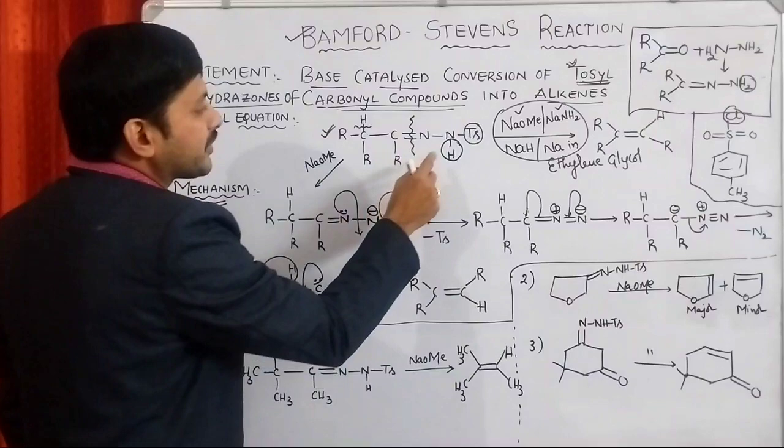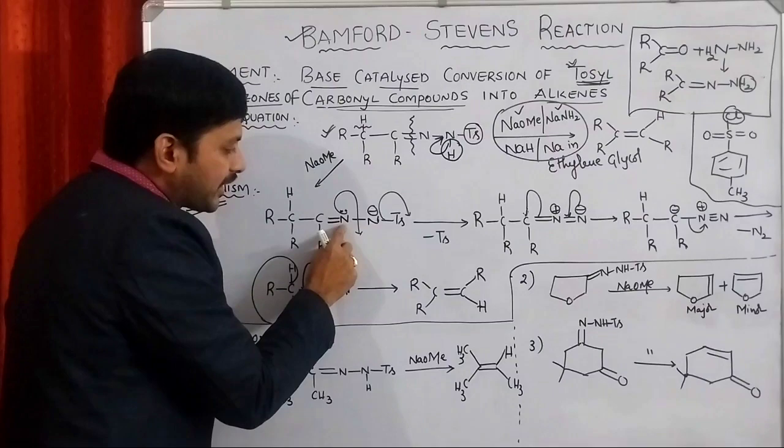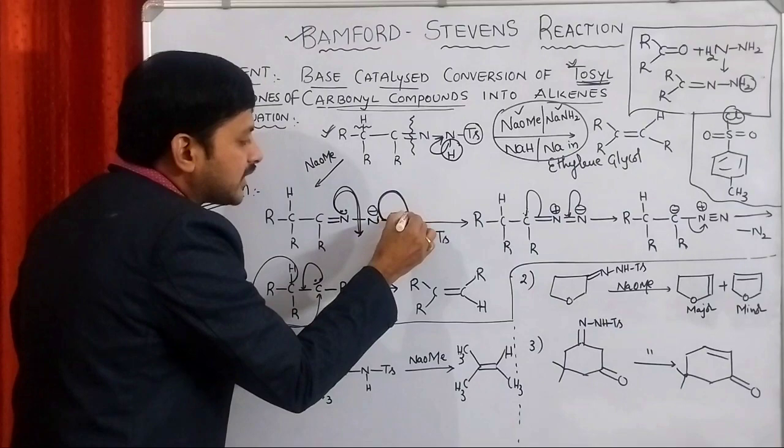This particular nitrogen is going to donate its lone pair of electrons. Thereby the T-S group is removed in the form of T-S minus. So the tosyl group is removed.